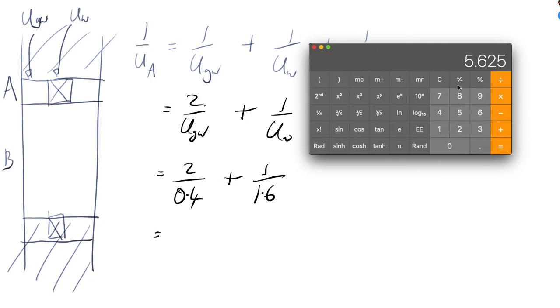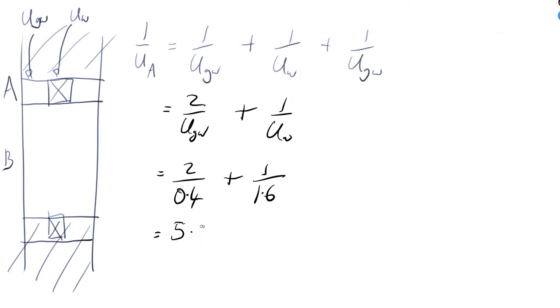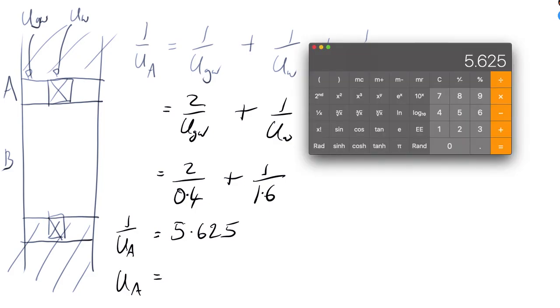So that's 2 divided by 0.4 plus 1 divided by 1.6 is 5.625. That's 1 over U_A. So that gives us U_A equal to.